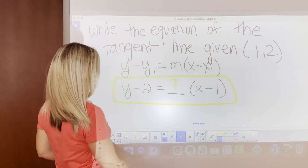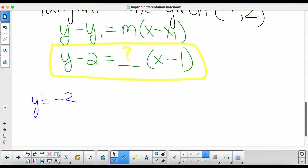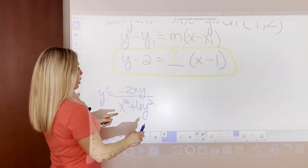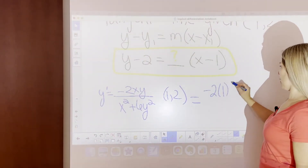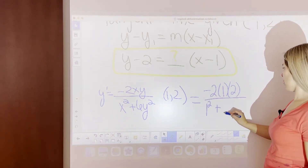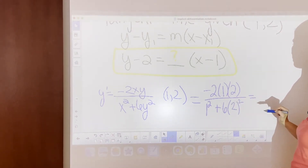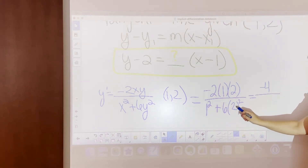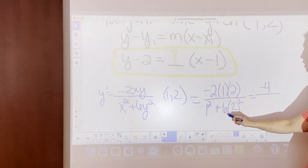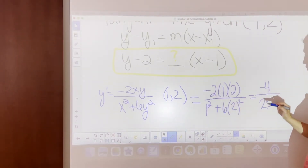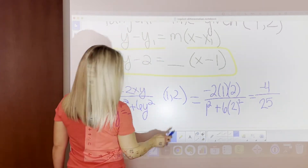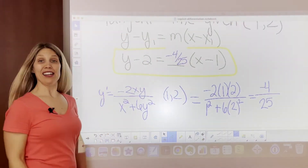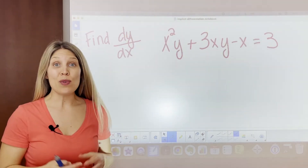Our x and y values are one and two: y minus two equals (slope) times (x minus one). We plug into our derivative — negative 2xy over (x squared plus 6y squared) — substituting x equals one and y equals two. The numerator gives negative four; the denominator: one squared is one, two squared is four, four times six is 24, plus one is 25. So the slope is negative four over 25, and that's the equation of the tangent line.